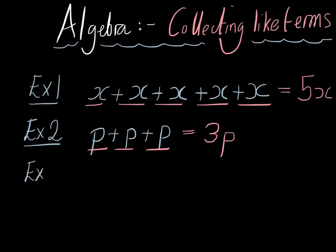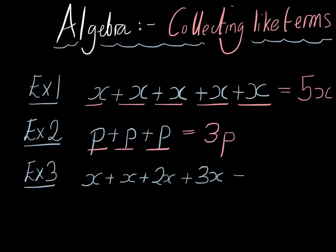Example 3. Say we had x plus x plus 2x plus 3x. What would we have? Well we have 1x plus another x is 2x, plus another 2x is 4x, plus another 3x is equal to 7x. So we would have 7x.